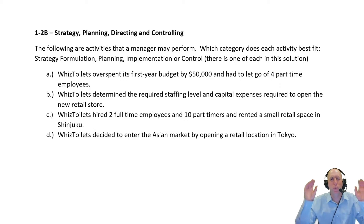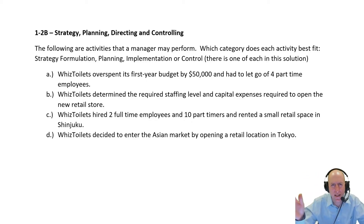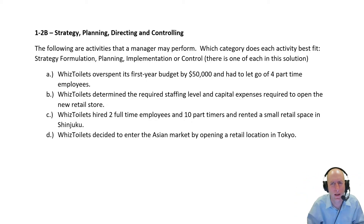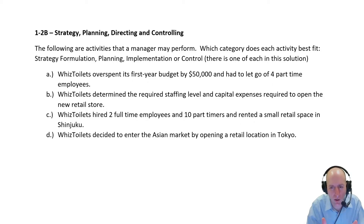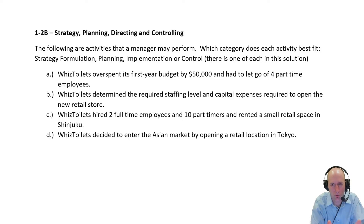At the very top, we have a broad strategic direction — what are we doing broadly? Planning is making a map of where we're going. Directing is doing your best to follow that map — you're saying we're trying to go north and I'm going to direct us northward.